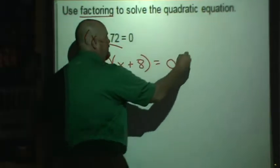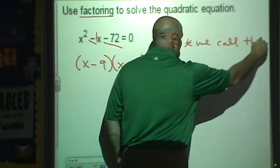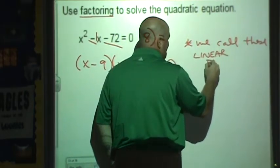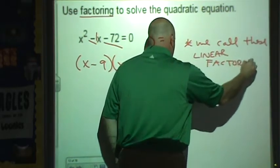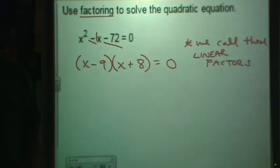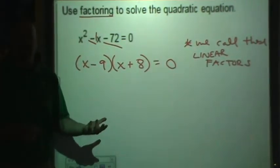More specifically, we call these linear factors. We call these linear factors. That might not be so obvious, but we call them linear factors because each one separately could be graphed as a line.